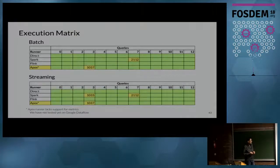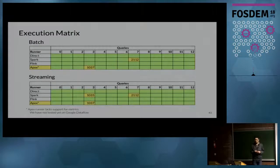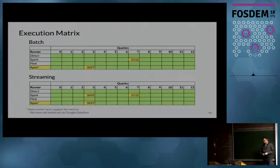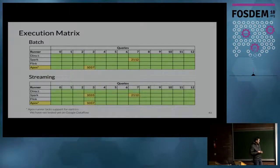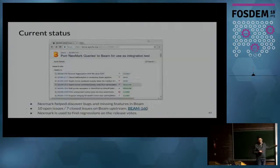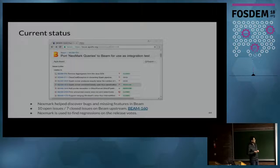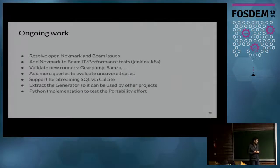So what is the current status and future work? We have a support matrix for every runner and every query. Those numbers are the Jira tickets still pending for full compatibility. There are new runners already in Beam that haven't been added to the matrix yet. We track most Nexmark things in BEAM-160 Jira, so if you're interested you can look there.